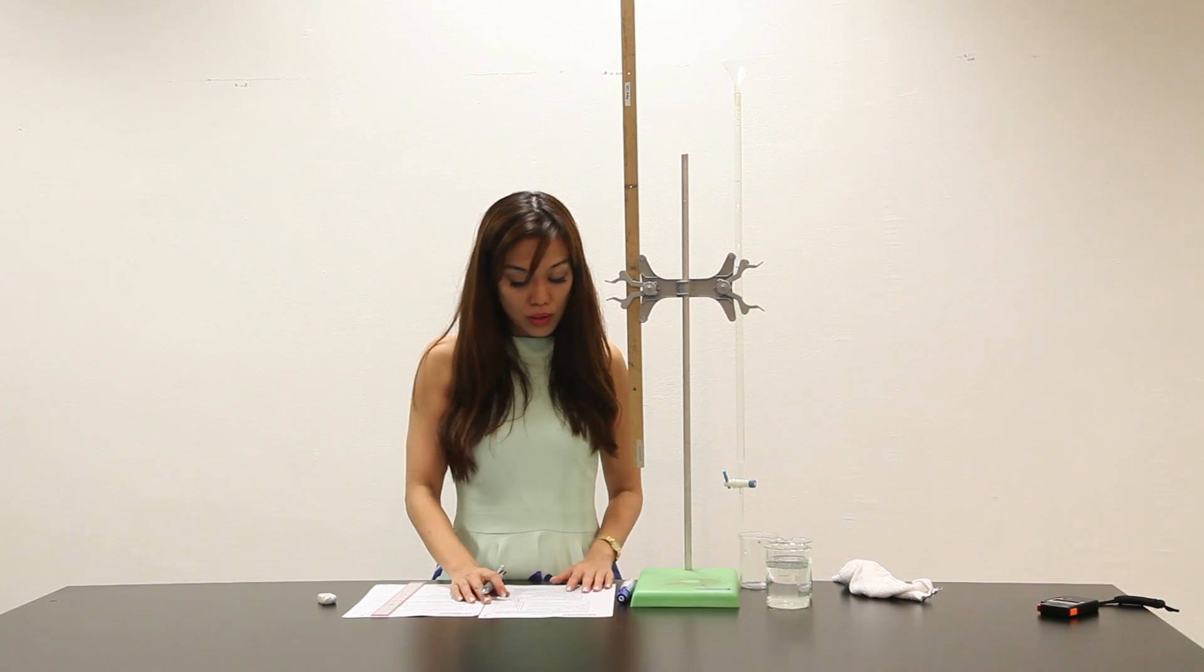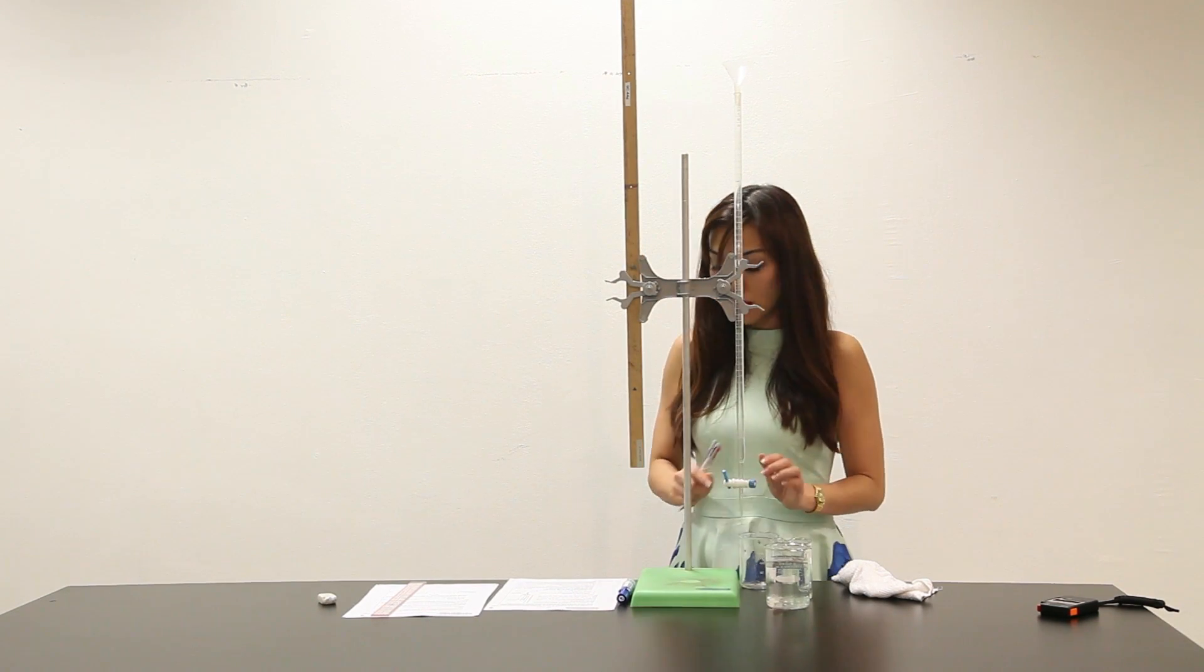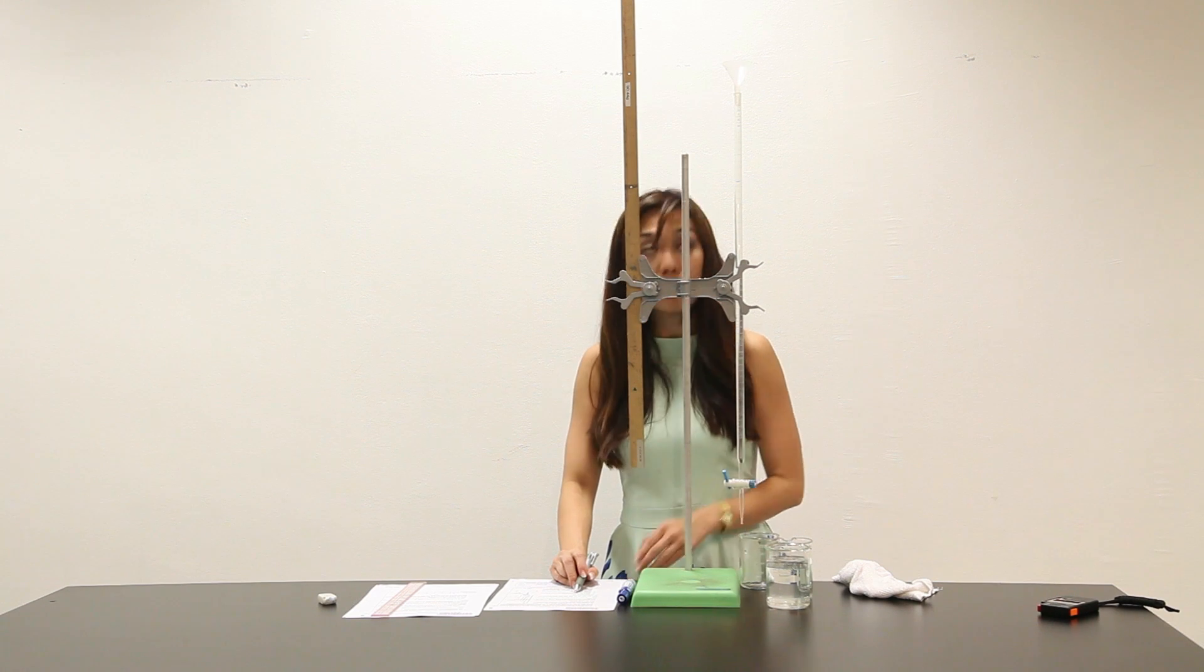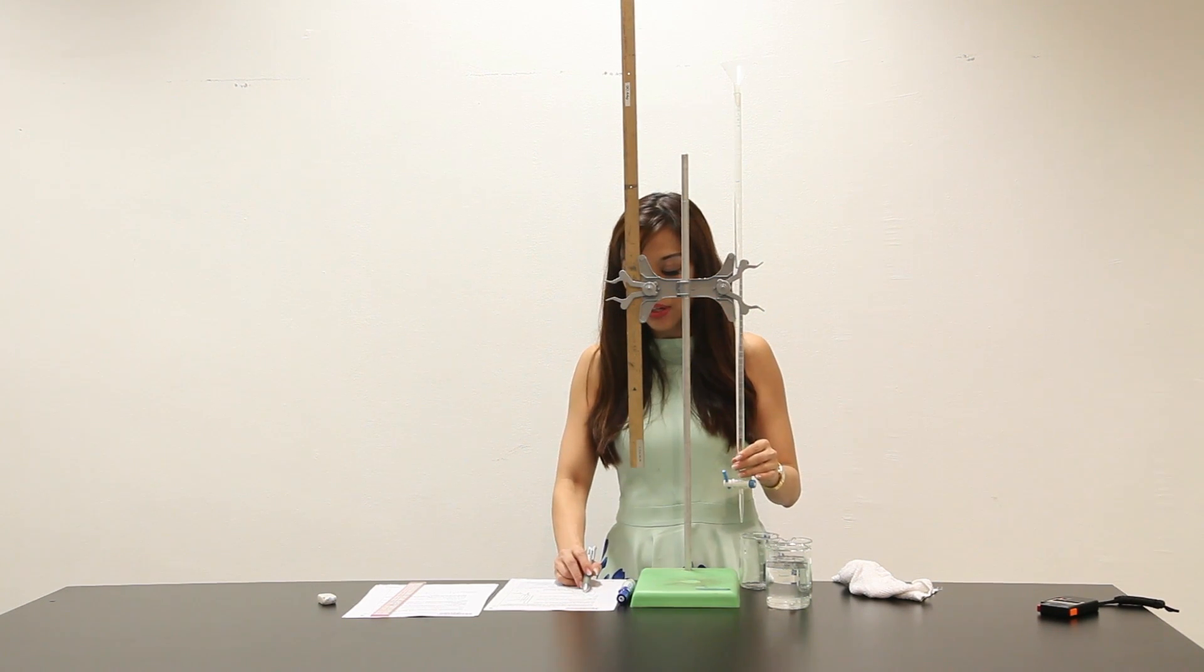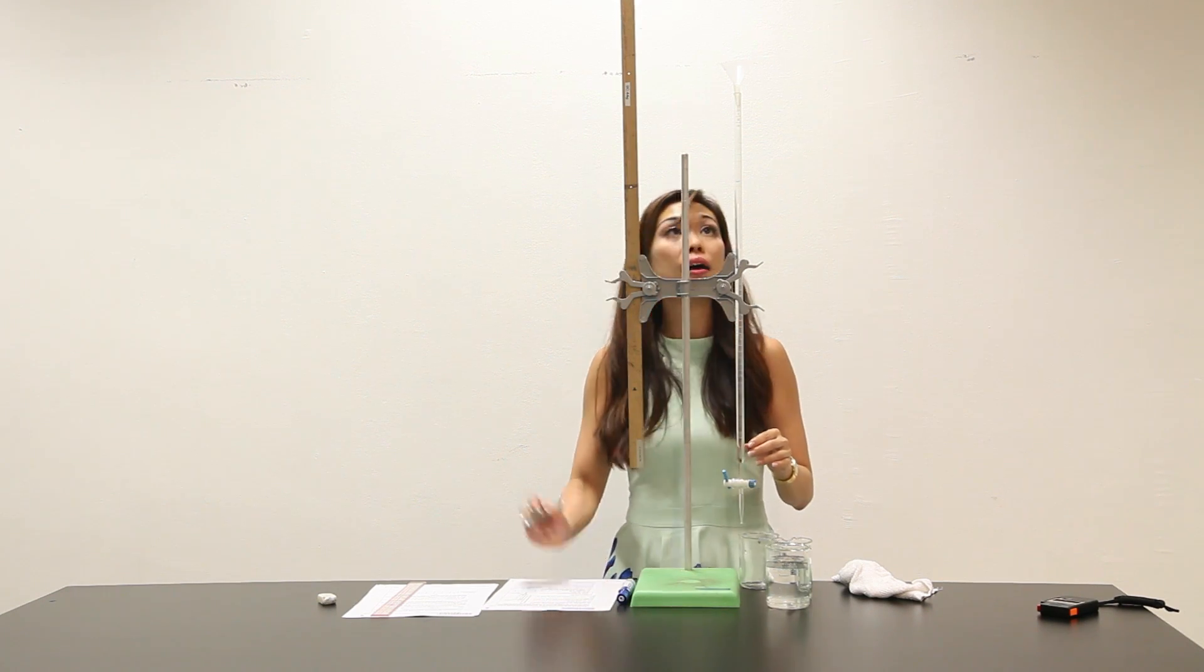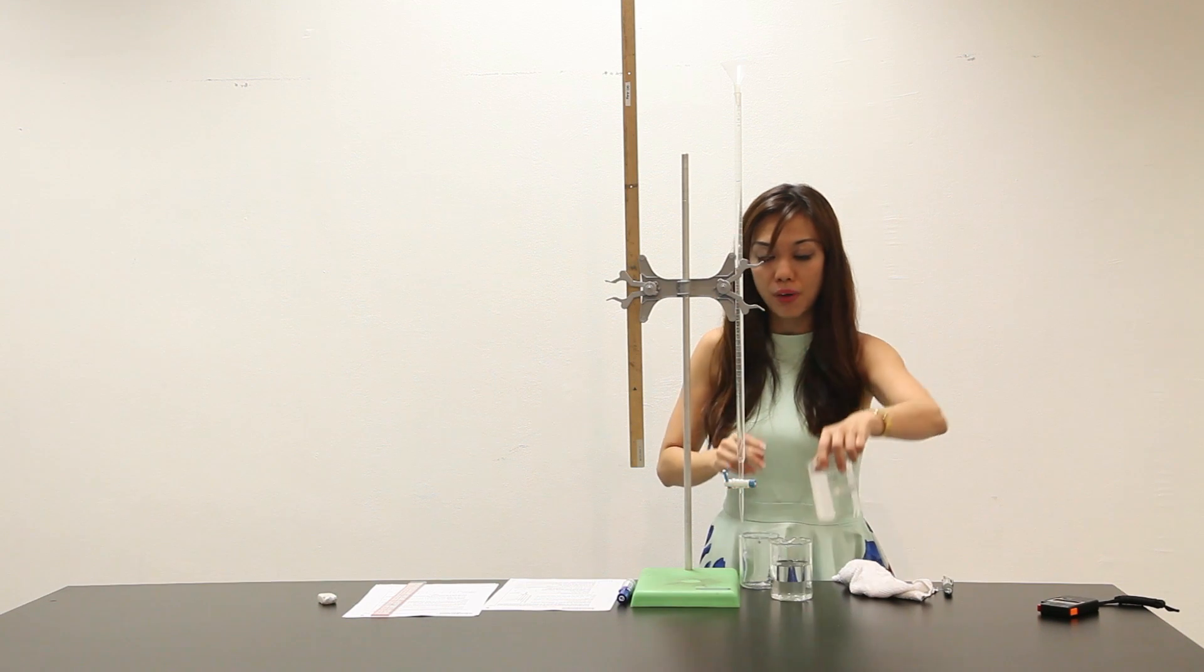Setting the flow rate: first we have to close the tap on the burette. The tap on the burette is closed. Using a funnel, which is over here, fill the burette with water so that the level is well above the zero mark. Zero mark is here, so I have to fill this up all the way well above the zero mark.